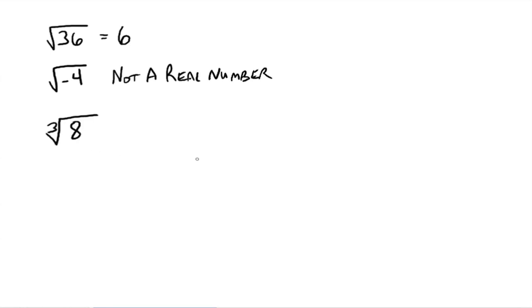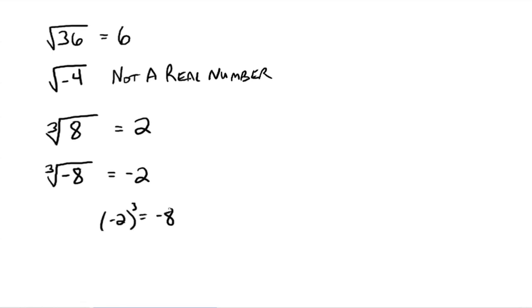The cube root of 8 — we've got the little 3 in the index — means we're looking for some number that when we cube it gives us 8. That number is 2, because 2 cubed is 8. What about the cube root of negative 8? We're looking for something that when we cube it gives negative 8 — that's negative 2, because negative 2 cubed is negative 8. So if the index is odd, it doesn't matter if the radicand is positive or negative, you'll get a real number back.